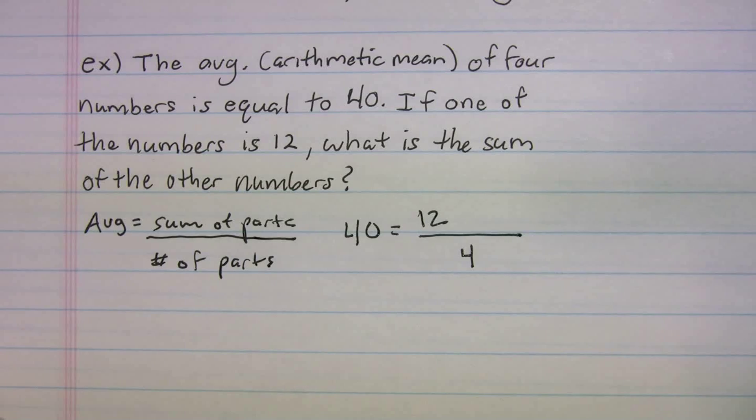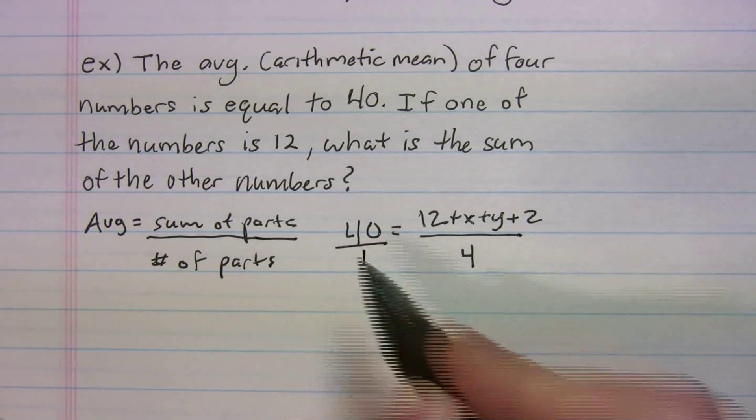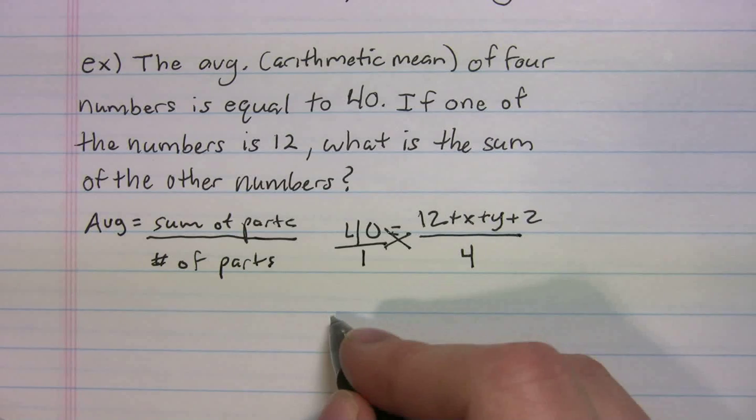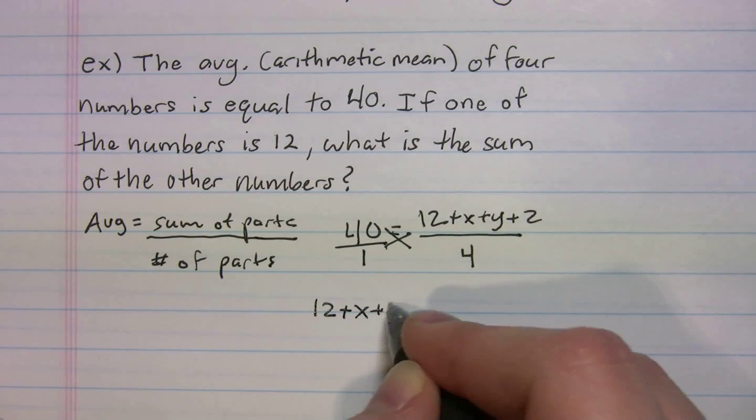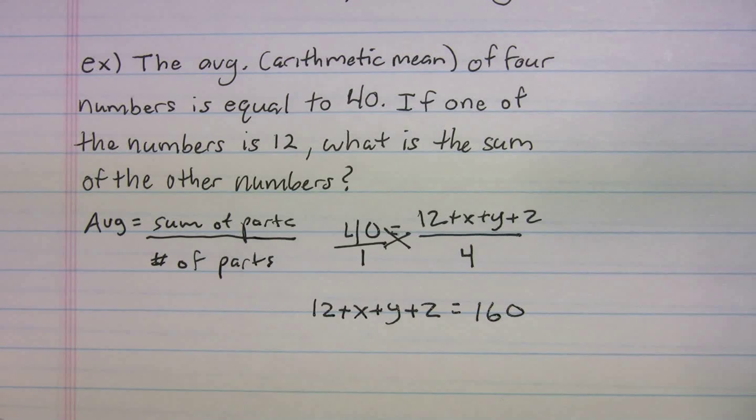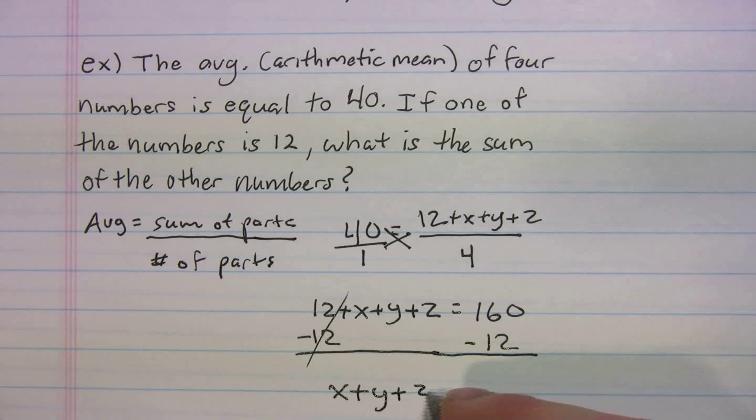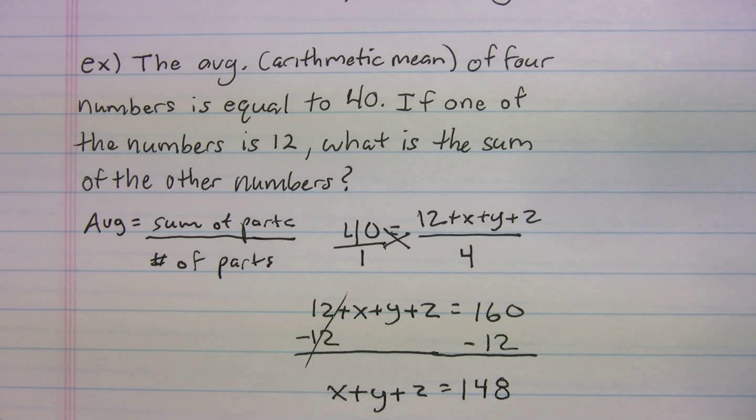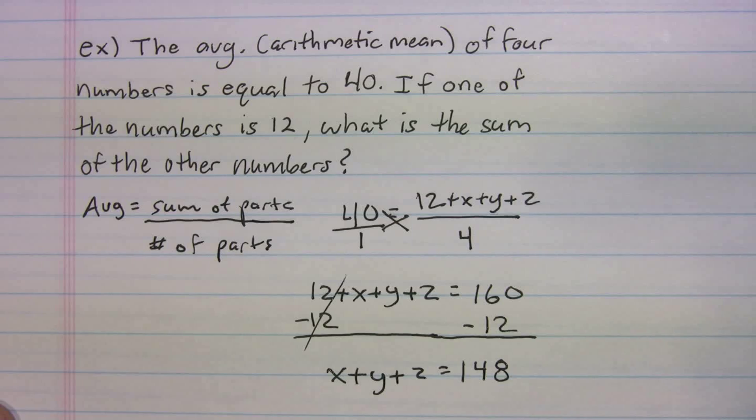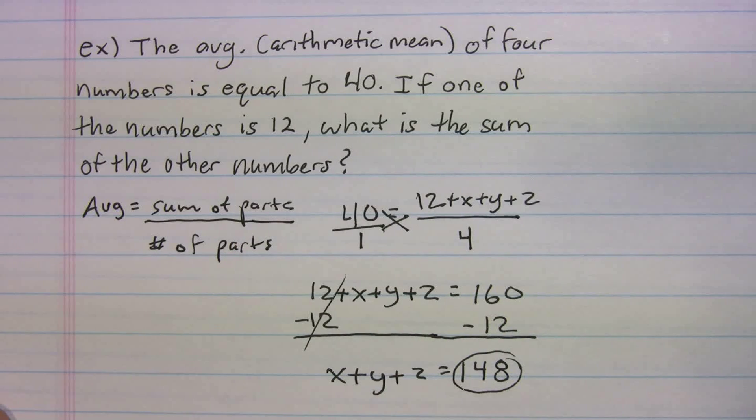We have four numbers and it says one of the numbers is 12. Well, we have three numbers left, right? So why don't we call them x, y, and z. Again, we're going to cross multiply. So 12 plus x plus y plus z is equal to 40 times 4 is 160. Let's minus the 12. And we get x plus y plus z is equal to 148. So 148 is your sum of the other numbers. We're looking for the sum of the other numbers.